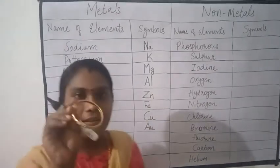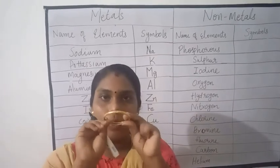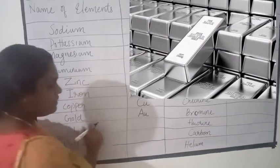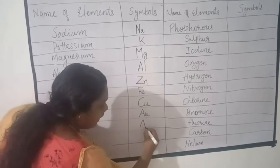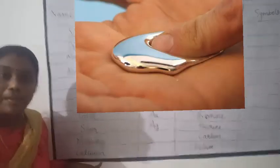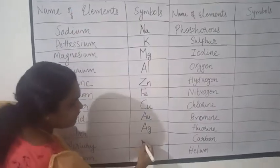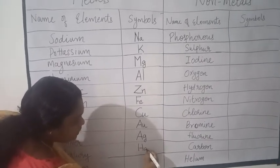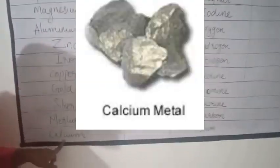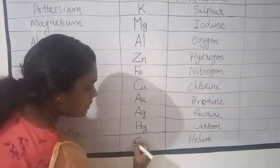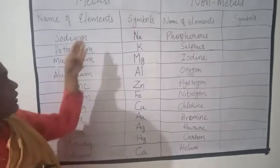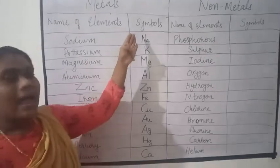See this bangle — this bangle is made up of gold. The symbol of gold is Au, capital A, small u. The next one is silver — the symbol of silver is Ag, capital A, small g. The next one is mercury — the symbol of mercury is Hg, capital H, small g. The last one is calcium — the symbol of calcium is Ca, capital C, small a.